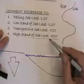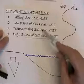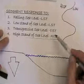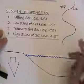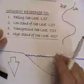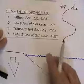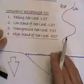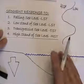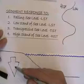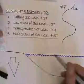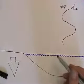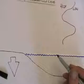The high stand systems tract and the low stand systems tract and the transgressive systems tract are encompassed by sequence boundaries. The first sequence boundary then is formed when sea level drops below the shelf margin as we see here and starts to erode it. So let's have a look at this response.